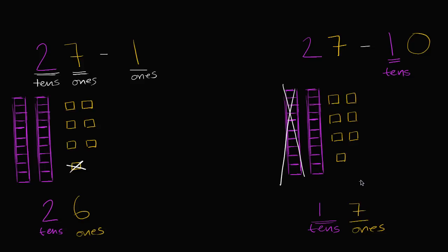Another way to think about it - and this might be how you did it when I first asked you - if I'm taking away a one, I reduce my ones place by one. So I go from 27 to 26. But if I'm taking away a 10, then my tens place goes down by one. I go from a two in the tens place to a one in the tens place, from 27 to 17. The ones place didn't change.